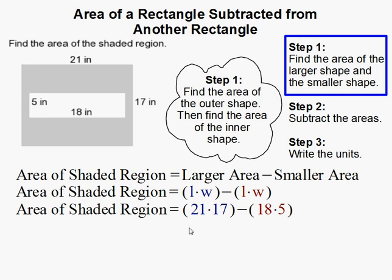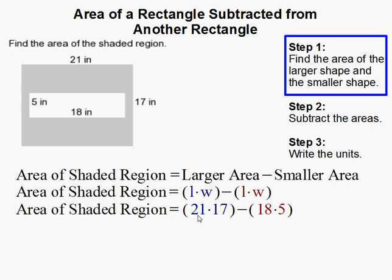So I substituted here. Length times width is 21 times 17 for the larger rectangle. And then for the smaller one, we have 18 and 5. So 18 times 5.